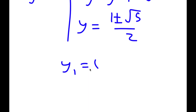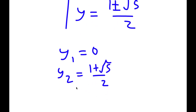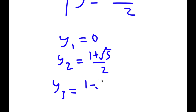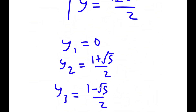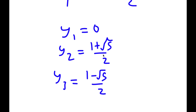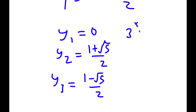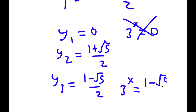So my solutions for y are 0, (1 plus the square root of 5) over 2, and (1 minus the square root of 5) over 2. Remember, we set 3 to the power of x equal to y. For 3 to the power of x equals 0, you can't take a power of a number and make it equal to 0, so this is wrong. For 3 to the power of x equals (1 minus square root of 5) over 2, that's a negative number, and you can't raise a positive base to get a negative result, so this is wrong as well.